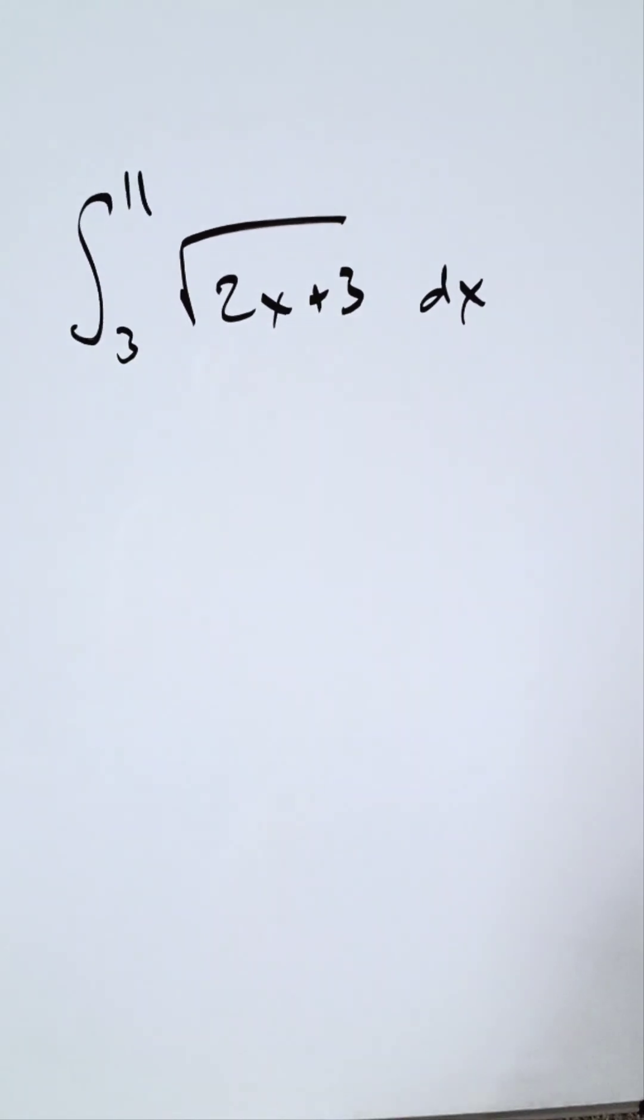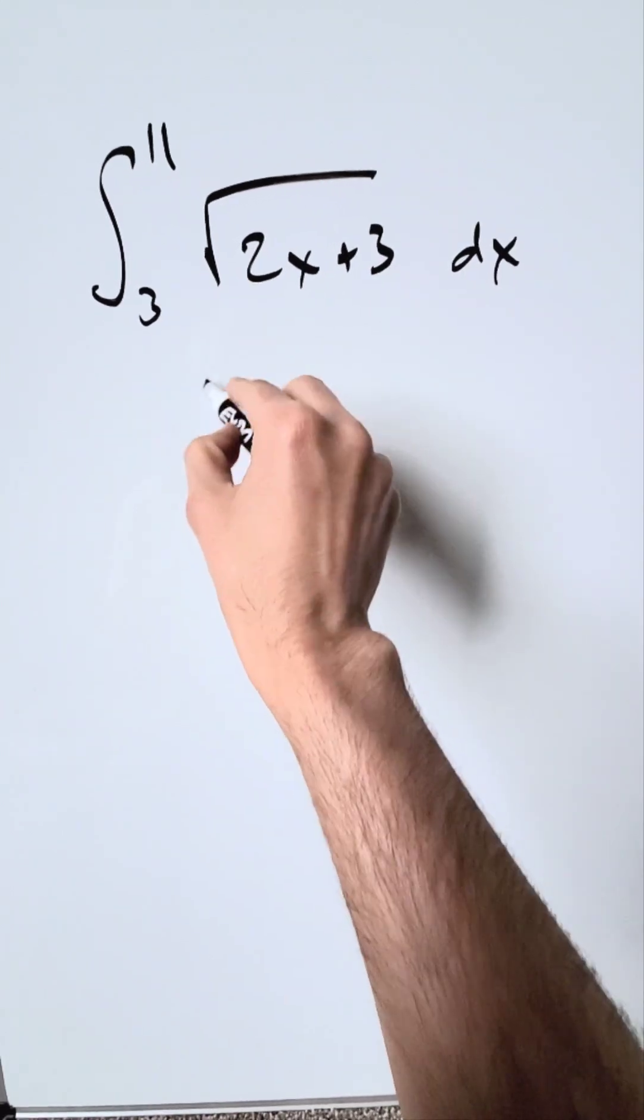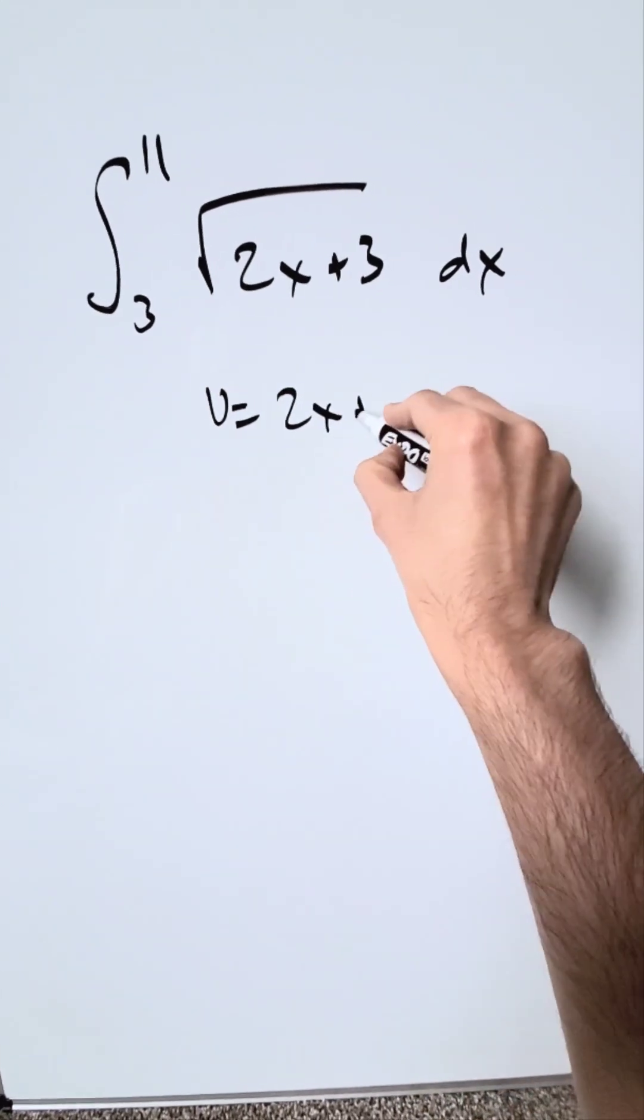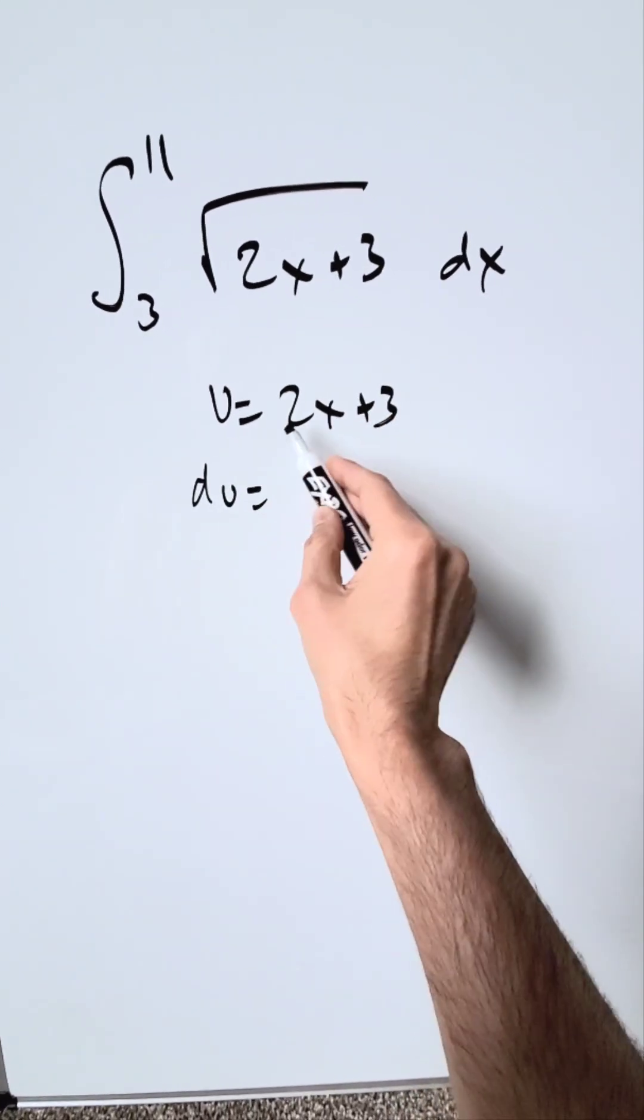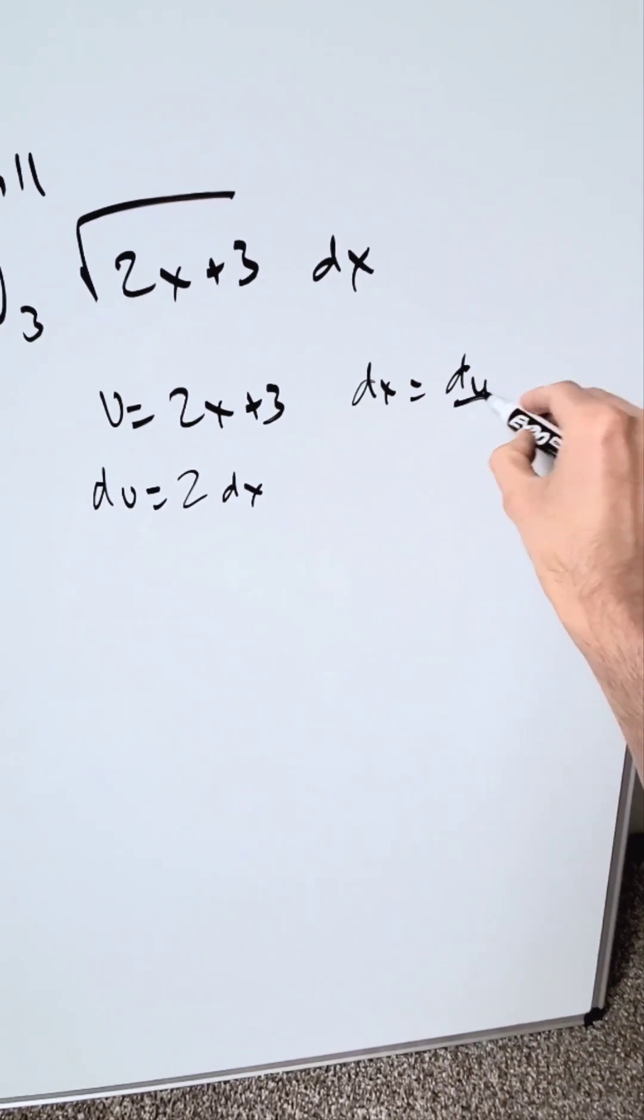A classic polynomial substitution or u-substitution integral technique will come through. I know u is equal to 2x plus 3. I'm doing the derivative of this, which will be 2dx. Solve for dx. dx is equal to du over 2.